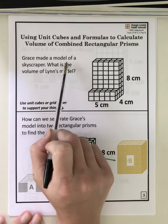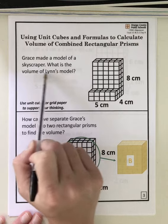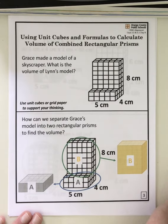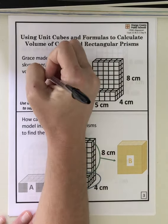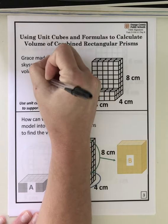It says Grace made a model of a skyscraper. What is the volume of Grace's model? So let's change that to say Grace.